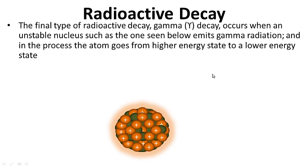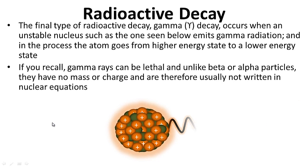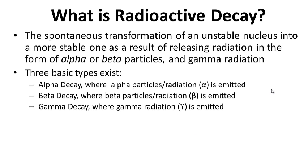The final type of radioactive decay, gamma decay, occurs when an unstable nucleus emits gamma radiation, and in the process the atom goes from a higher energy state to a lower energy state. Gamma rays can be lethal and, unlike beta or alpha particles, they have no mass or charge and are therefore usually not written in nuclear equations. Gamma radiation is often emitted during alpha or beta decay. For your notes, what is radioactive decay? Question on the left, answer on the right.